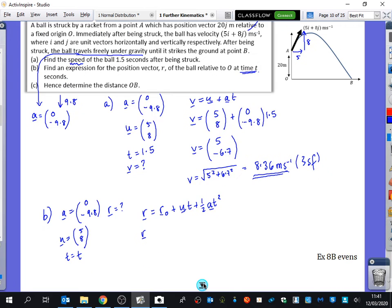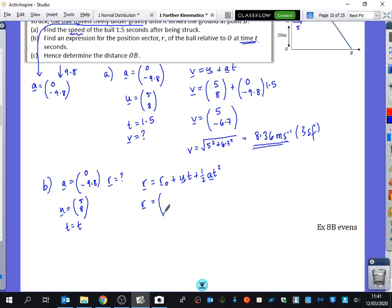So we're just going to shove everything into the formula. We get R₀ was (0, 20), right? We then get UT, which is (5, 8) multiplied by T. And then we get a half of the acceleration, which is going to be (0, -4.9) T squared. And that's all of part B done.